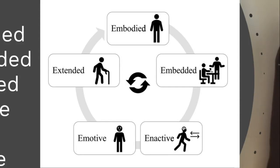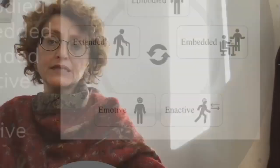Extended considers all the elements, whether biological or mechanical, which we use to interact with the environment. Emotive is the branch which studies how much emotion is important in the interaction with the environment.